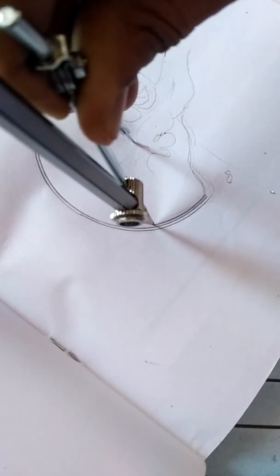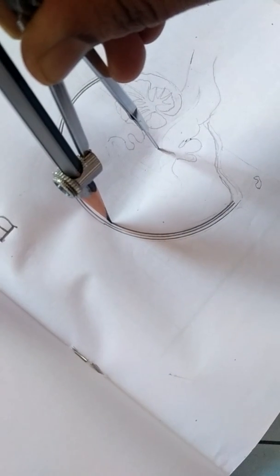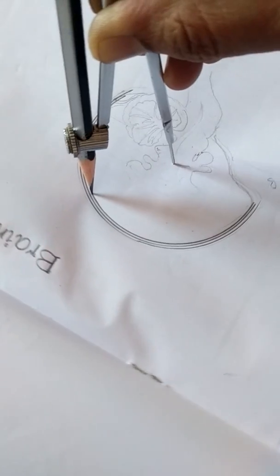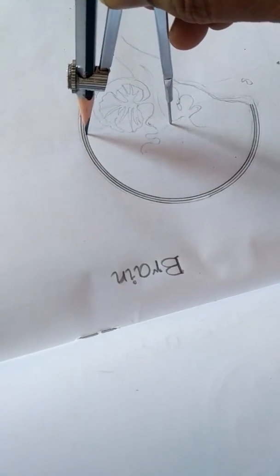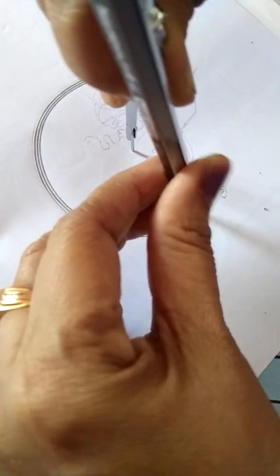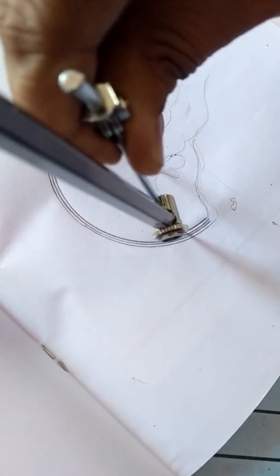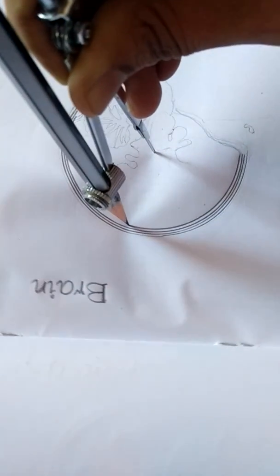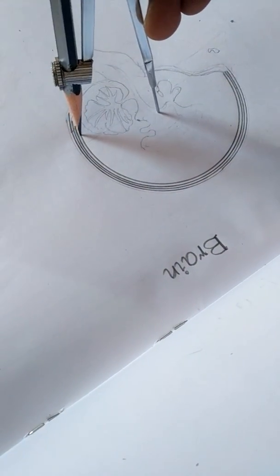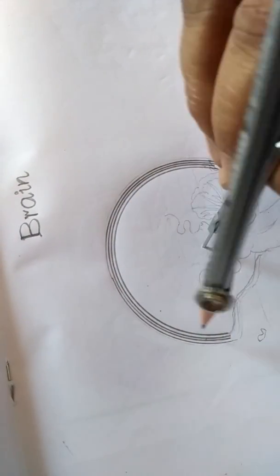So the outer line indicates the cranium. The first one is dura mater, second one is the arachnoid membrane, and third one is pia mater. The third one is pia mater. So like this three-fourths circle you have to draw.